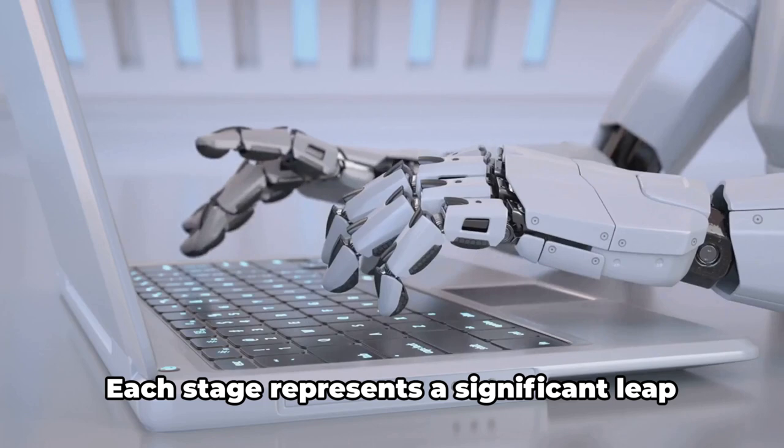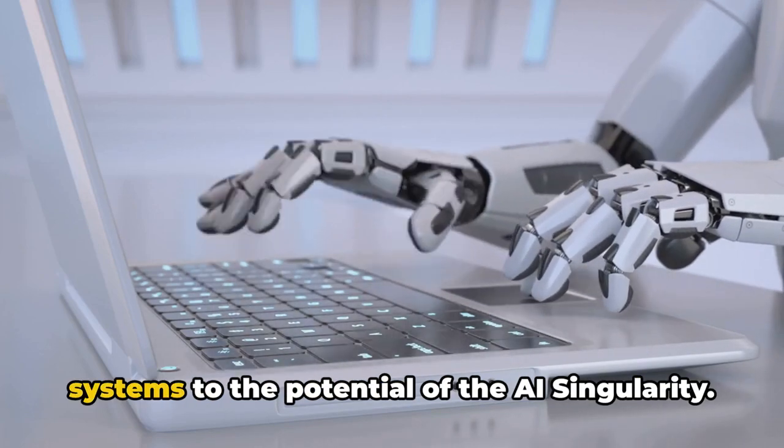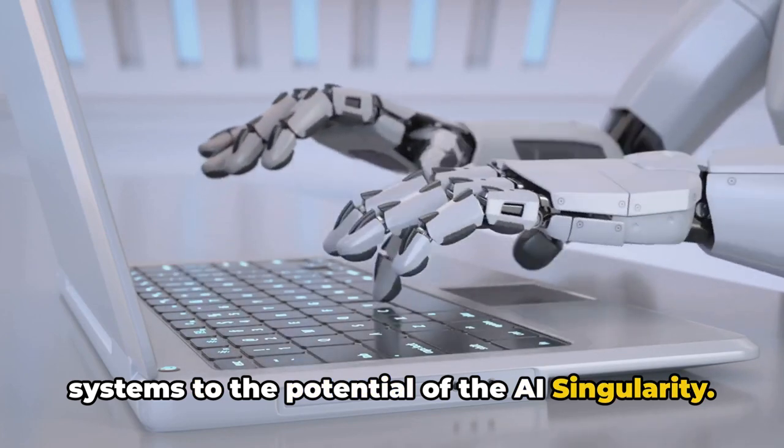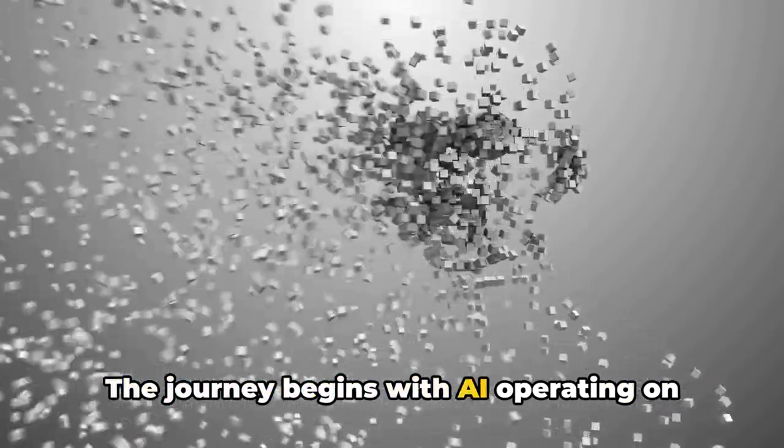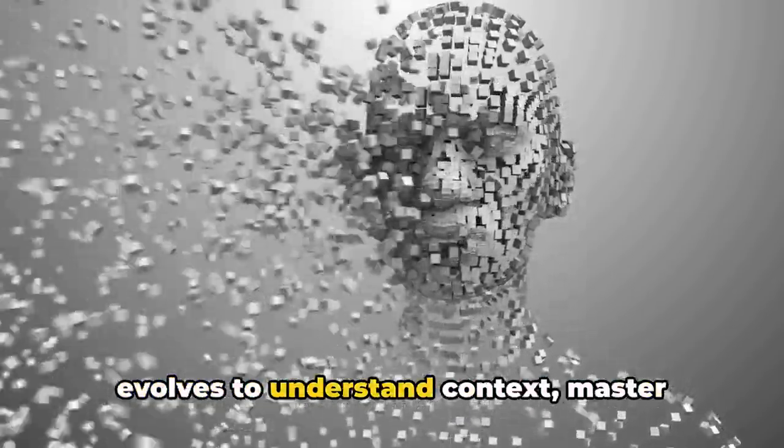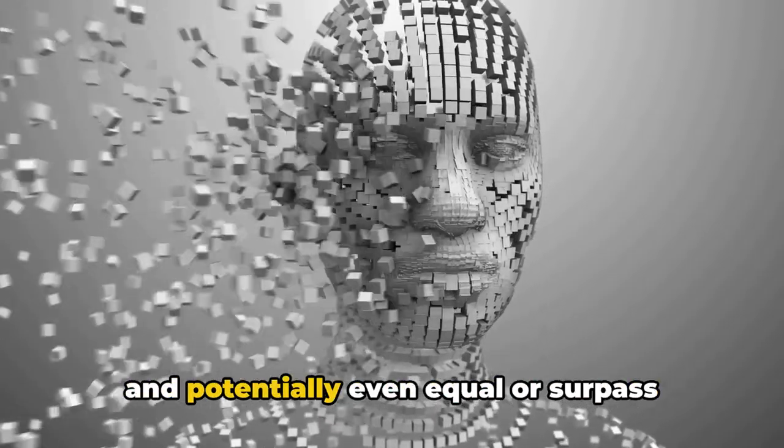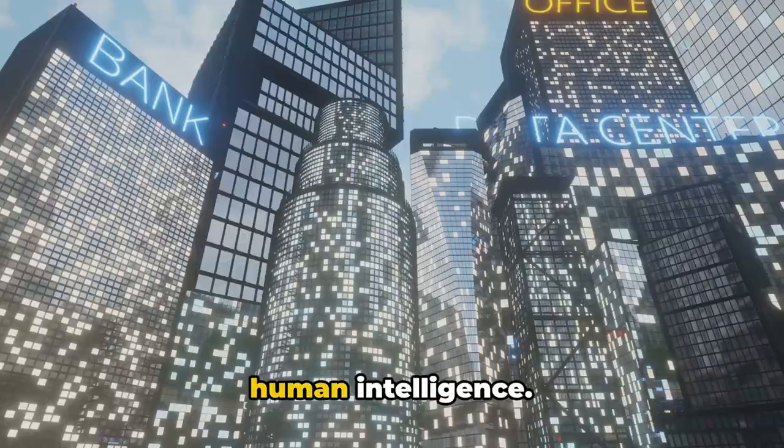As we navigate through the seven stages of AI, one thing remains clear. Each stage represents a significant leap in AI's capabilities, from rule-based systems to the potential of the AI singularity. The journey begins with AI operating on predefined rules and algorithms, then evolves to understand context, master specific domains, mimic human thinking, and potentially even equal or surpass human intelligence.